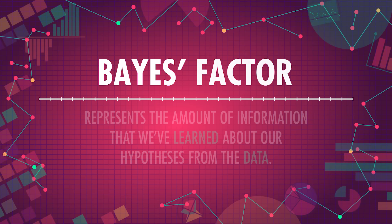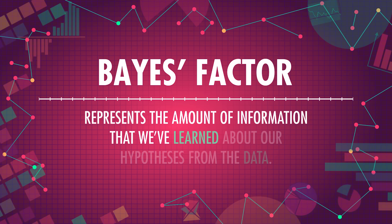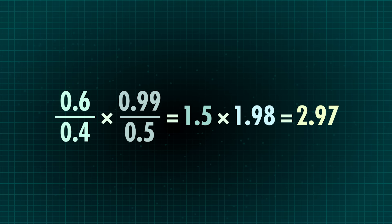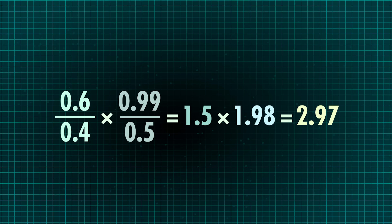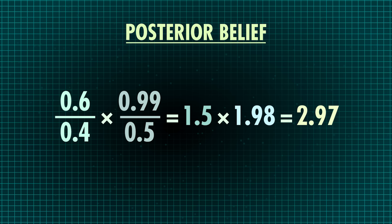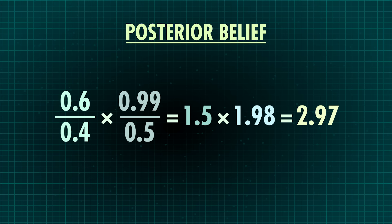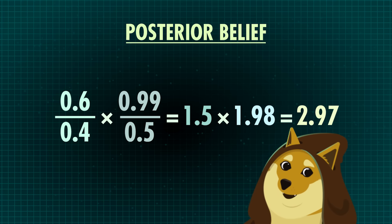Her heart starts beating a little faster. The ratio of the probability of our information under one hypothesis — that he's a fan — compared to another — that he's not a fan — is called a Bayes factor. It represents the amount of information that we've learned about our hypotheses from the data. Maria can use it to update her previous belief, or prior odds, that it's 1.5 times more likely that Jordan is a fellow Star Wars fan. All she has to do is multiply her prior beliefs — the ones she held before she had any new information — by the Bayes factor, which tells her how much to change her belief now that she has some evidence. The resulting belief is called her posterior belief, in this case 2.97. And she can continue to incorporate new information. When Jordan says his dog is named Anakin, she can again update her beliefs — or just ask.